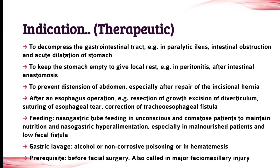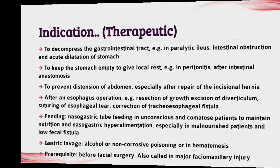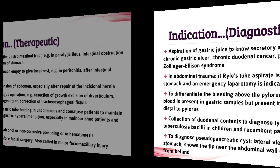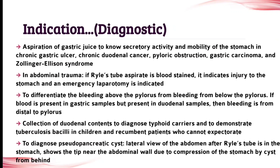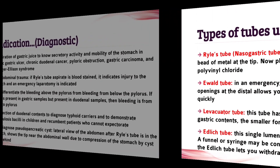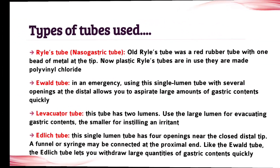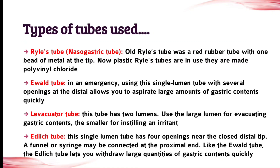The next topic is indication. There are two types of indication: the first is therapeutic and the second is diagnostic. Write all these points — all points are important for your assignment. The next topic is types of tube used. There are different types of tubes used in the NG tube procedure.